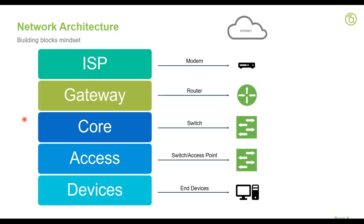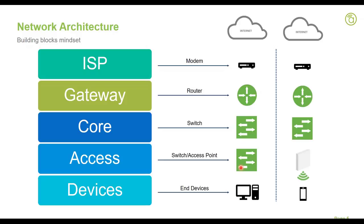This is the framework, and here is how it translates to a typical traffic path. Traffic coming to or from the internet goes through a modem — usually a third-party modem from the ISP — then to the gateway router, then to a core switch, then to an access layer which is either an access switch or, for Wi-Fi, access points, and finally to the end devices. This is how we should dissect the network.